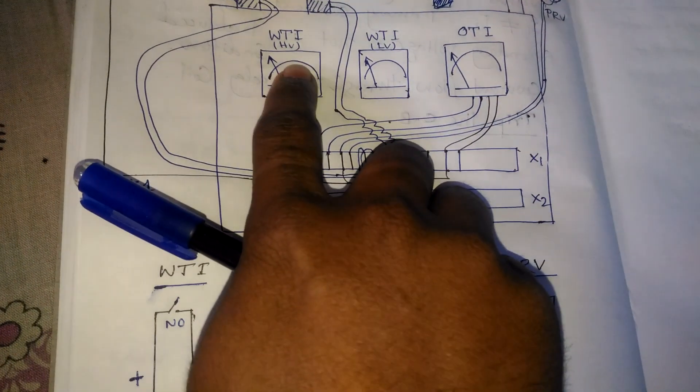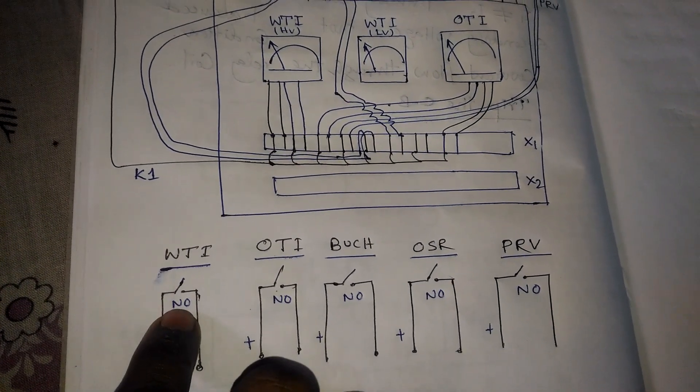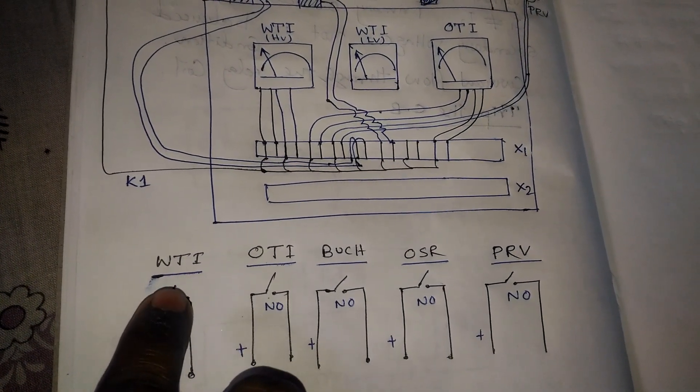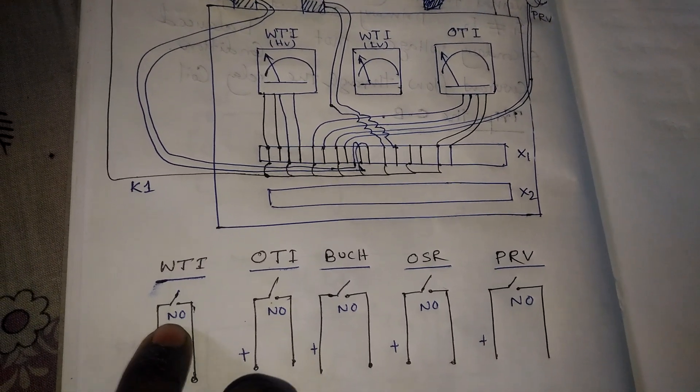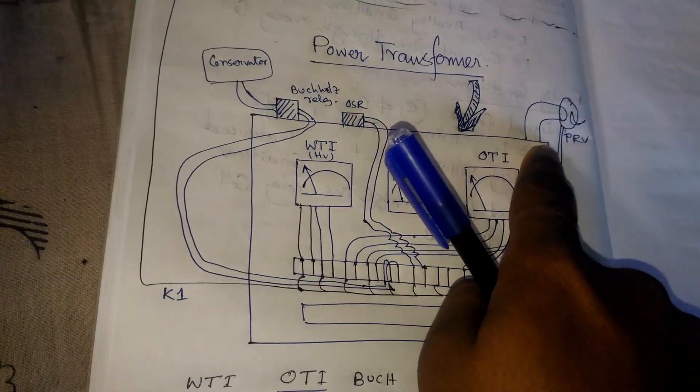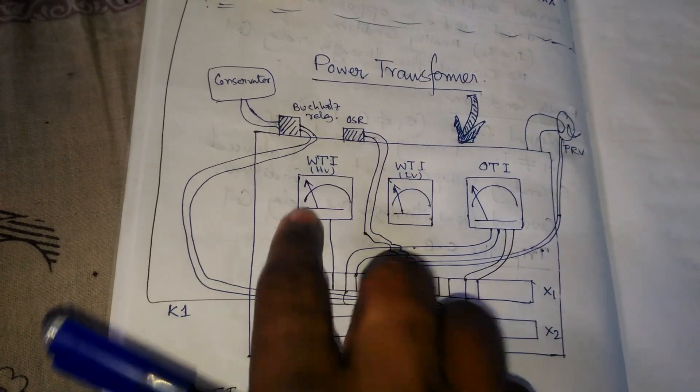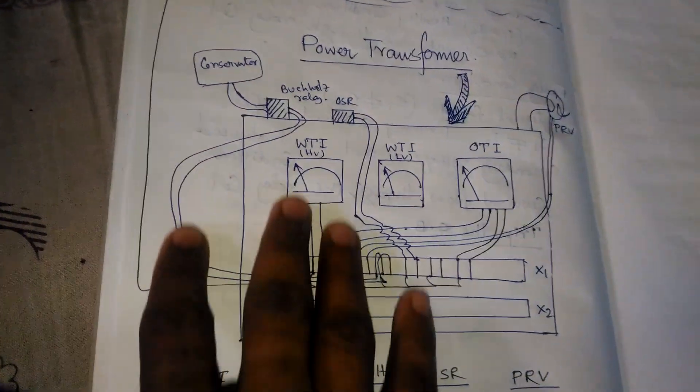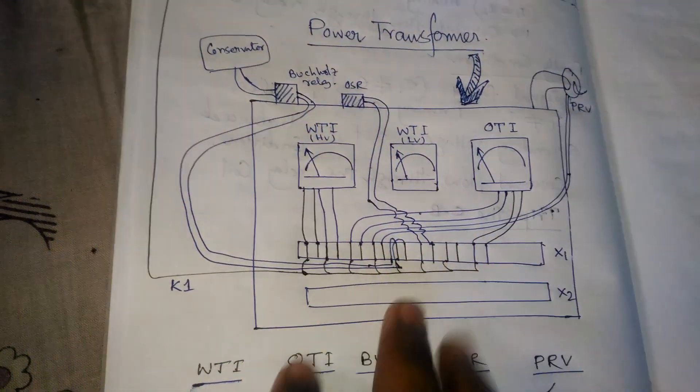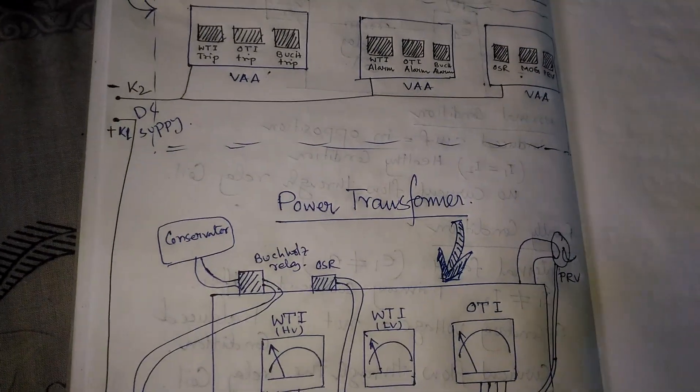Inside the WTI, this NO contact is present for the alarm and also for trip. We are using this NO contact inside the WTI, inside the OTI, inside the PRV, inside the OSR, inside the Buchholz relay, and whatever protections you are providing, all inside protections use NO contacts.